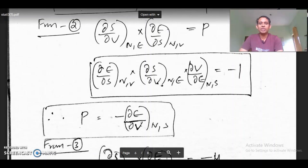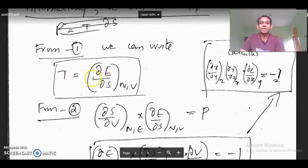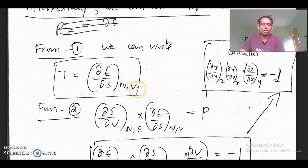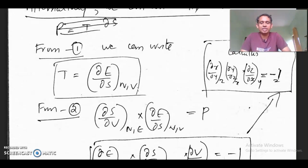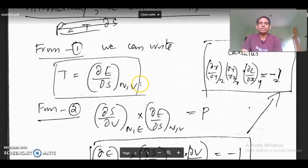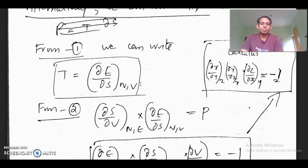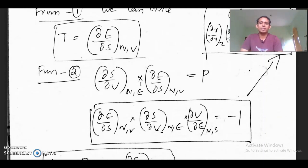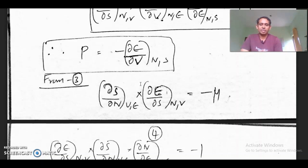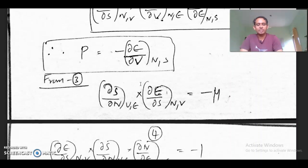So to summarize: temperature is ∂E/∂S, pressure is minus ∂E/∂V, and mu is ∂E/∂N — all derived from energy. This is another way of obtaining thermodynamic properties of the system; here we derive all properties from energy. In the earlier set, we used entropy for determining properties. If we have a relation for energy, we can determine all three properties from these equations.